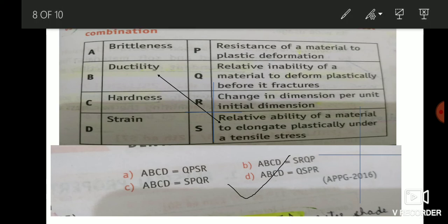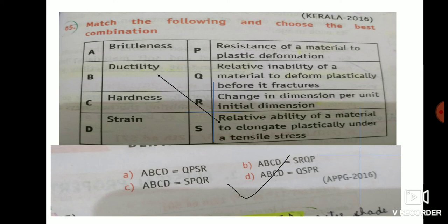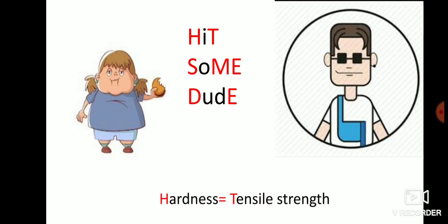Ductility is not 'change in dimension per unit initial dimension,' so B is not the answer. In option C, B is given as P, but P is 'resistance of material to plastic deformity,' which doesn't match. In answer D, B equals S — ductility equals 'relative inability of a material to elongate plastically under tensile strain.' So answer D is correct. Even knowing just one answer like ductility makes it easy to eliminate the rest.